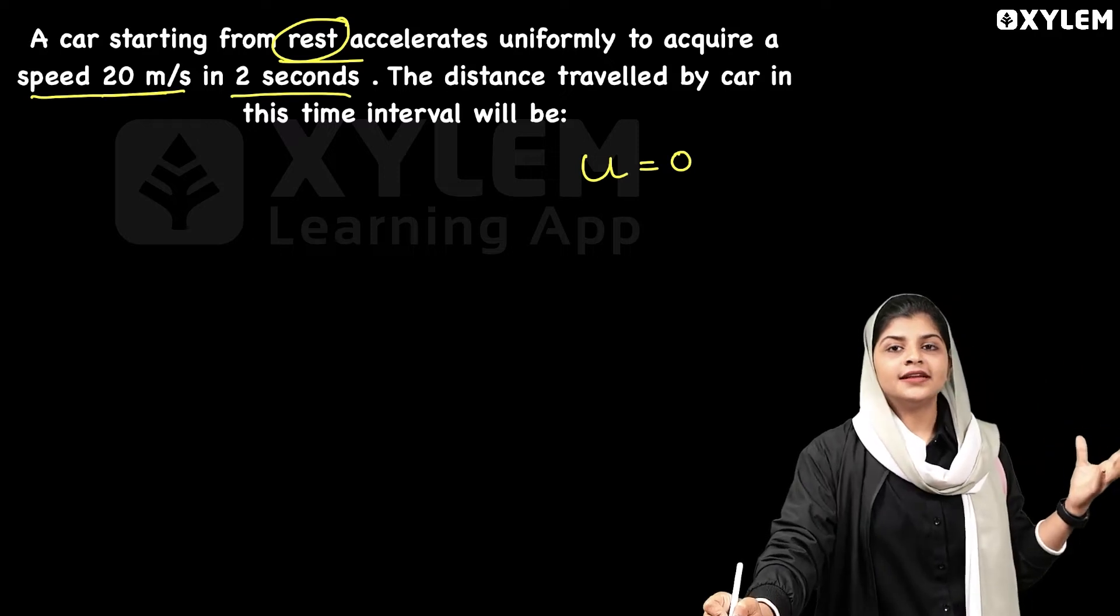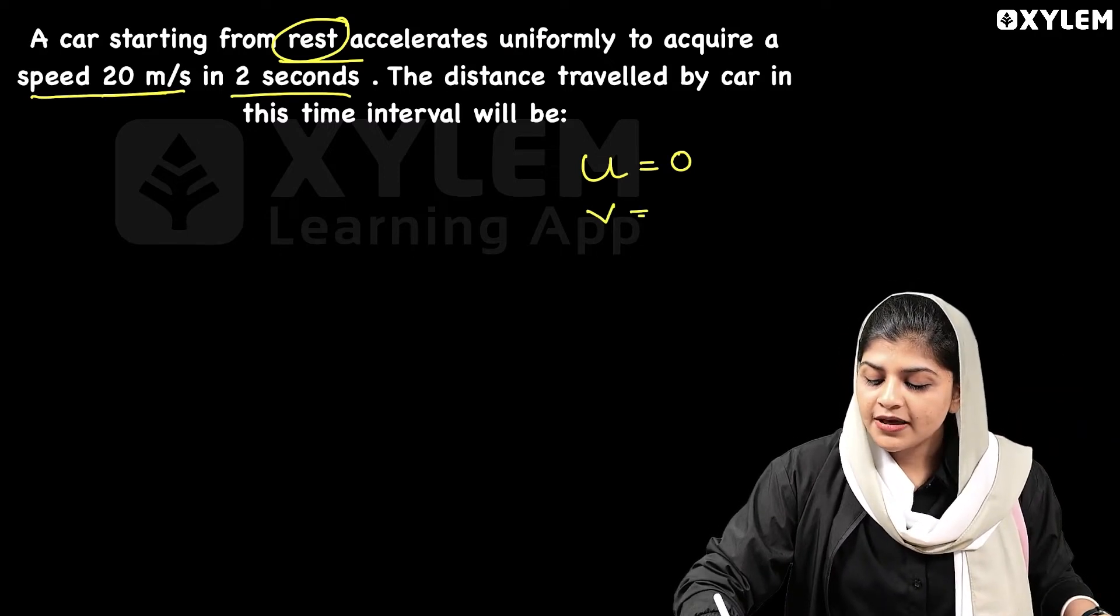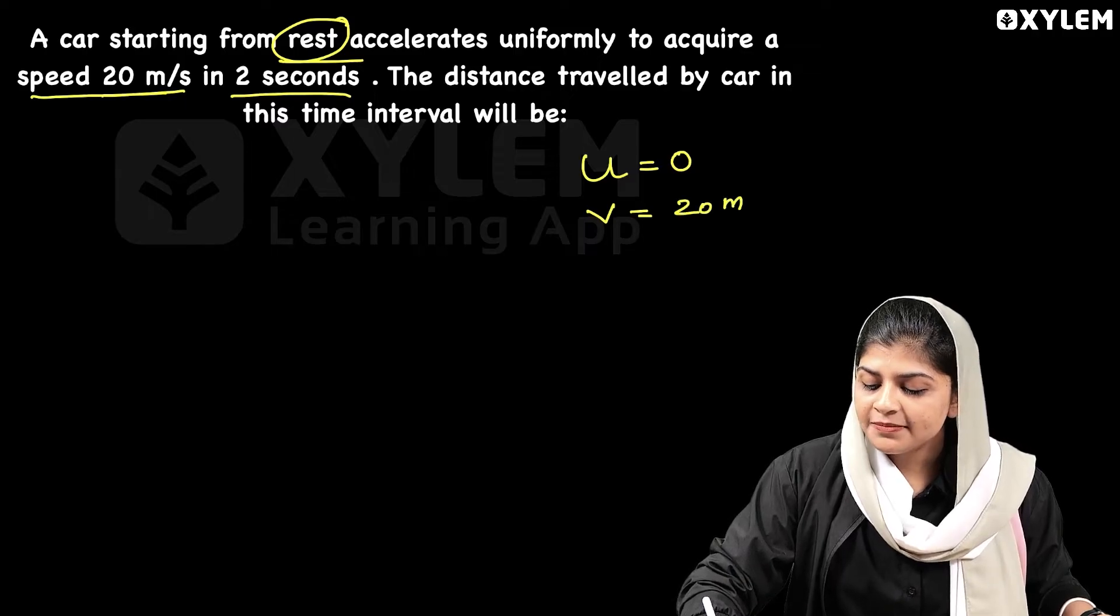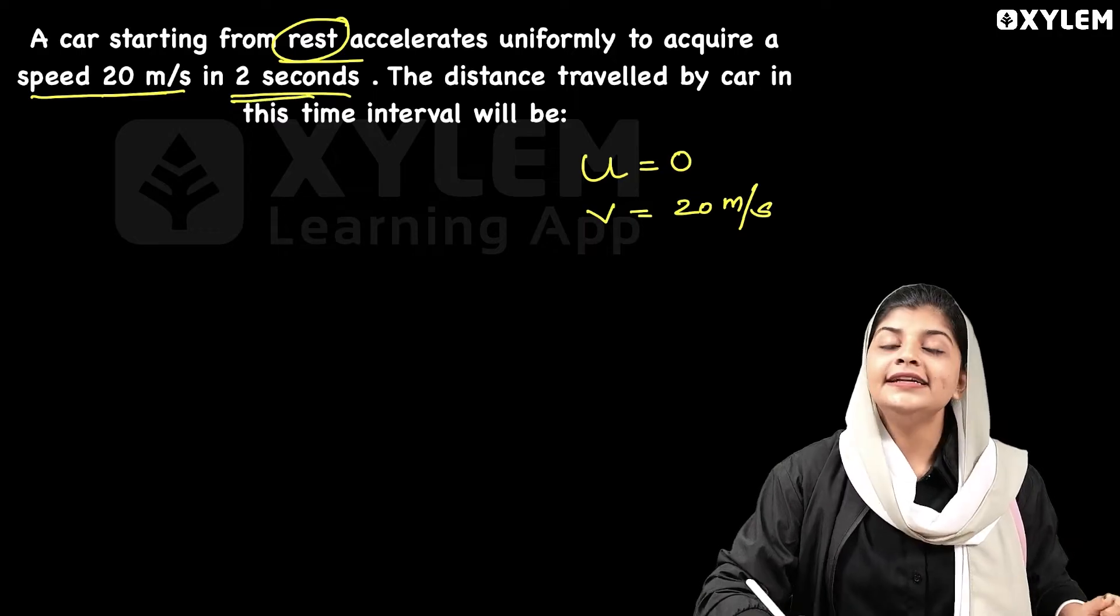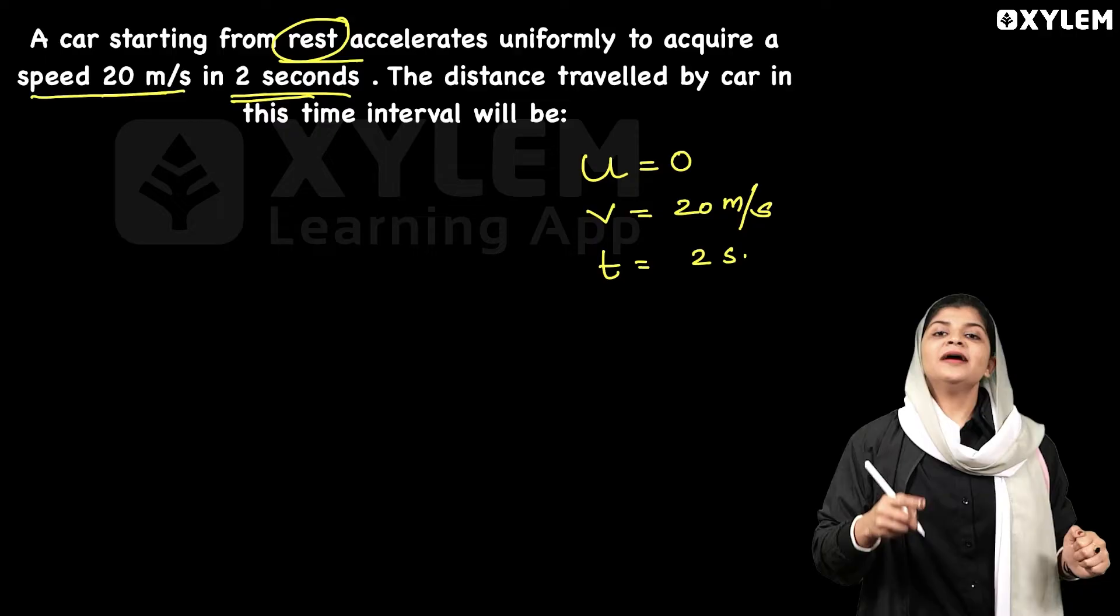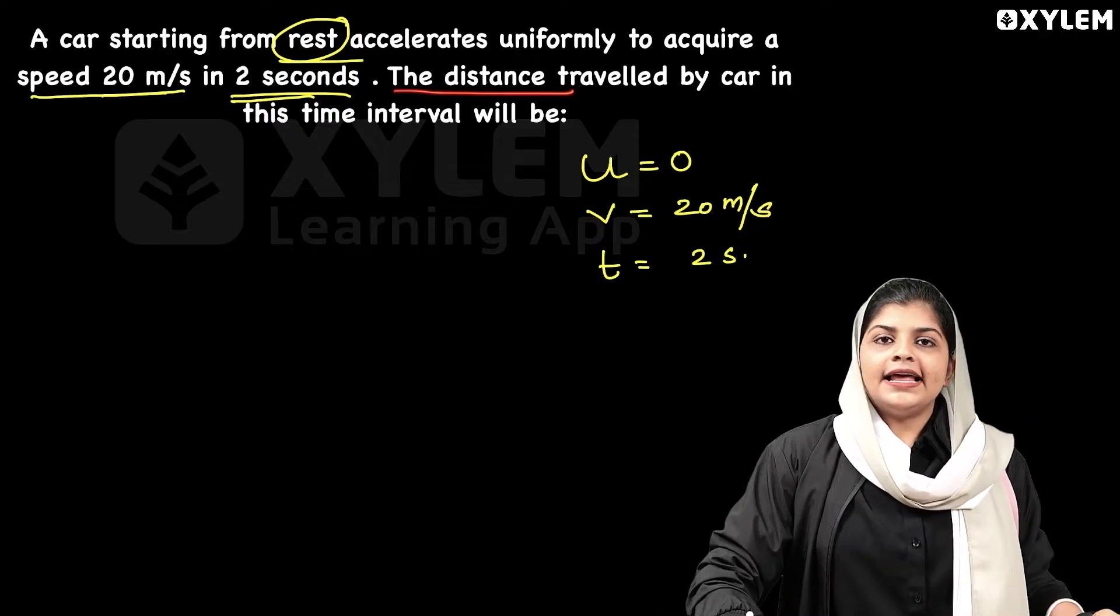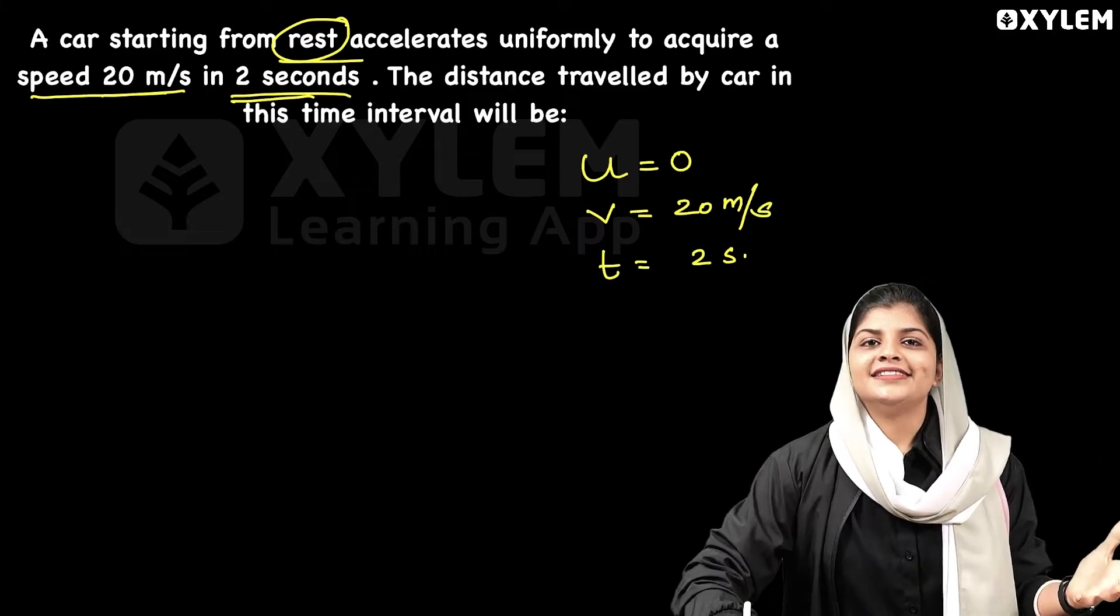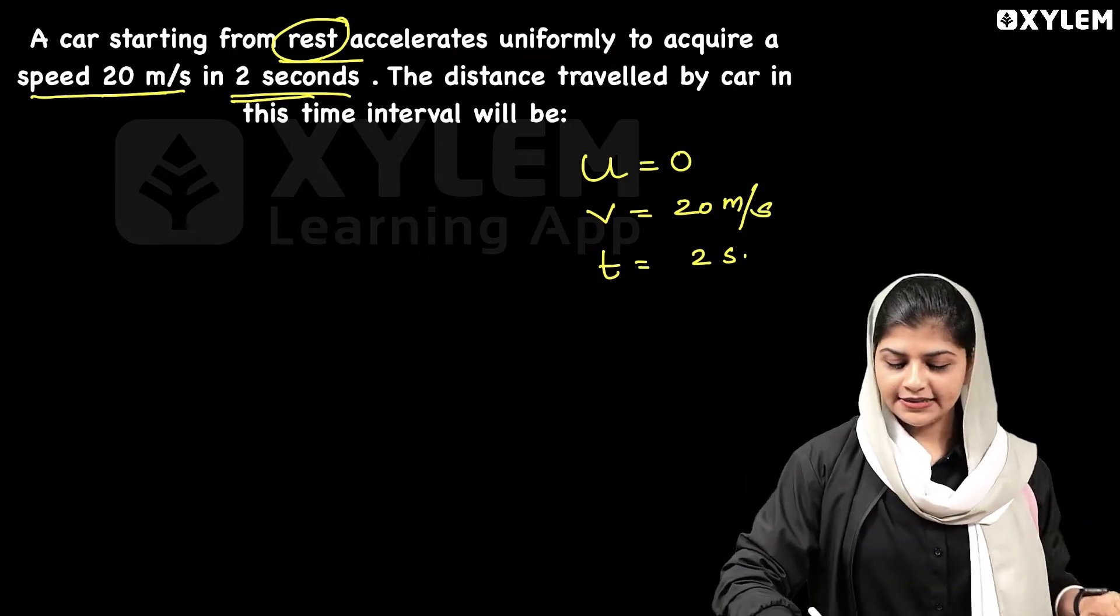In 2 seconds, speed is 20 meter per second. So v is 20 meter per second, and time t is equal to 2 seconds.